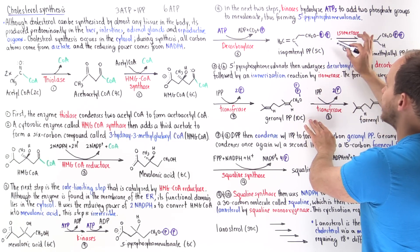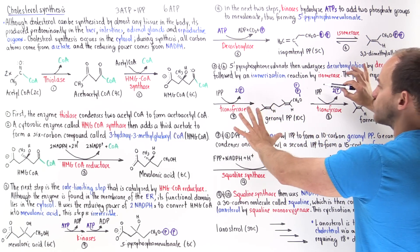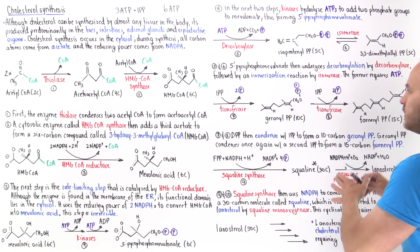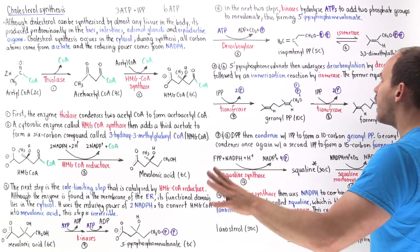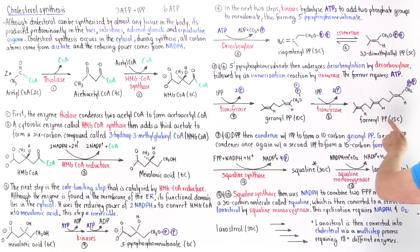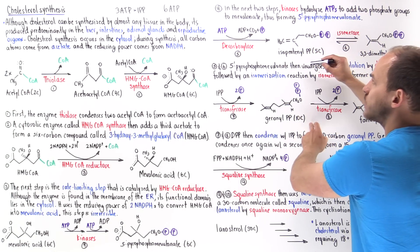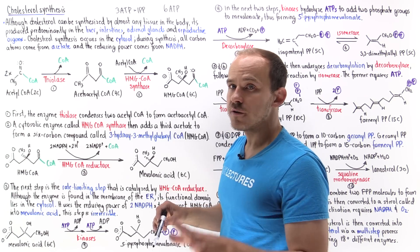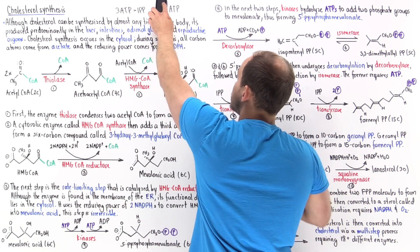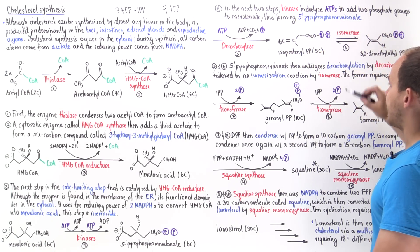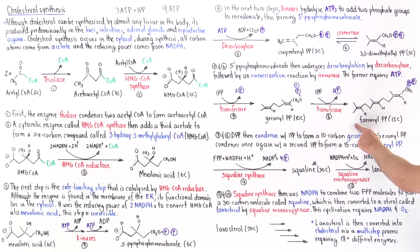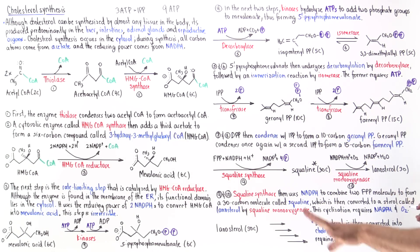Notice we still have these phosphate groups, which are important because they keep these relatively hydrophobic molecules dissolved within the cytosol — the two phosphate groups carry a lot of negative charge. Next, another transferase enzyme adds yet another IPP molecule to form a 15-carbon intermediate known as farnesyl pyrophosphate. That requires another three ATPs, bringing our total to nine ATP molecules used so far.